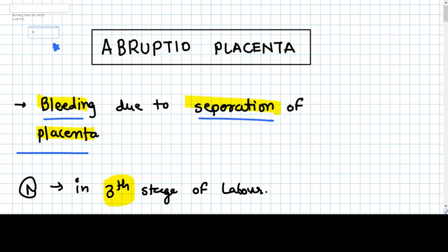Hello everyone, in this video we are going to talk about abruptio placenta. What is the definition of abruptio placenta? Bleeding due to separation of the placenta. But as we have seen in our channel, we don't discuss anything without understanding the concept.